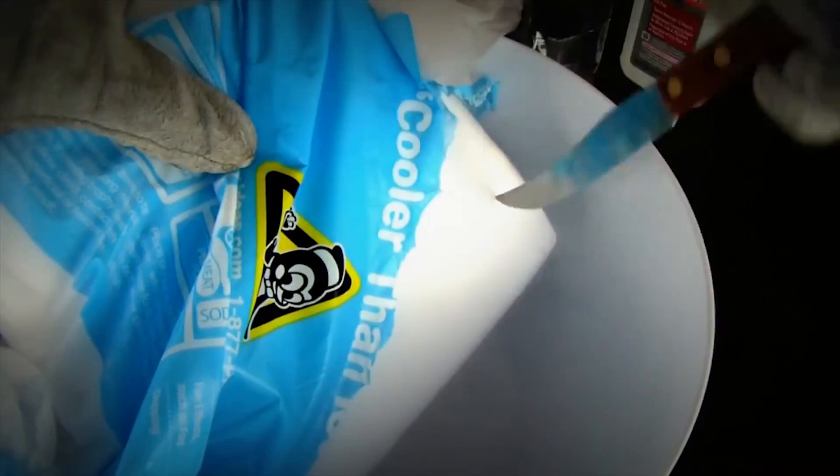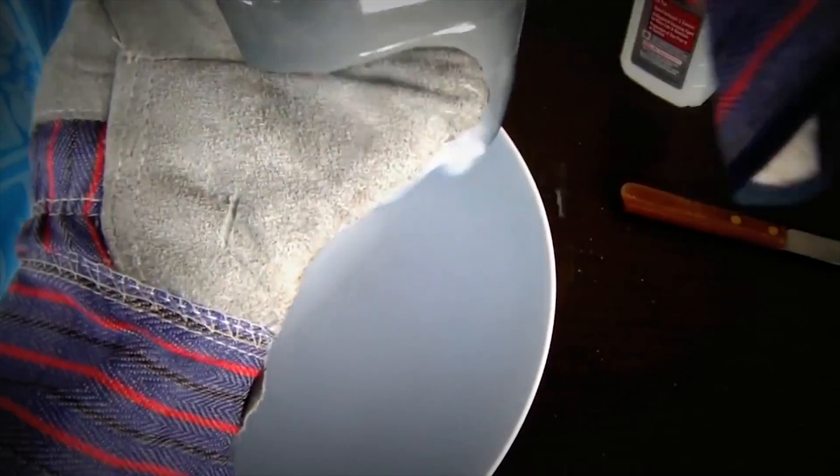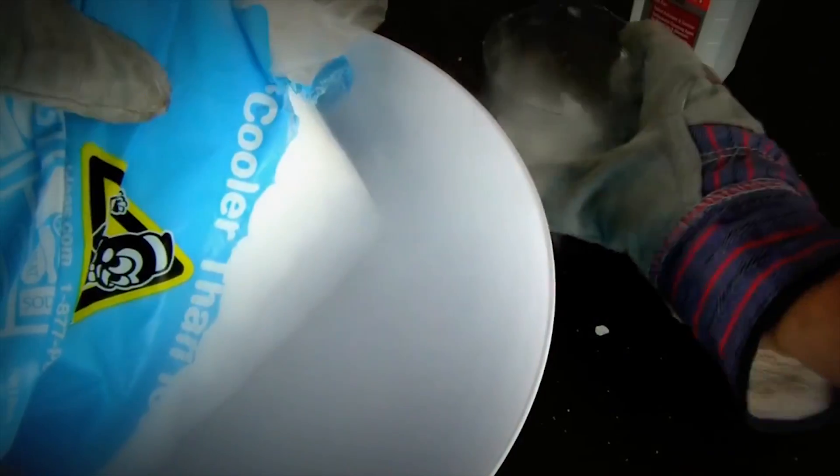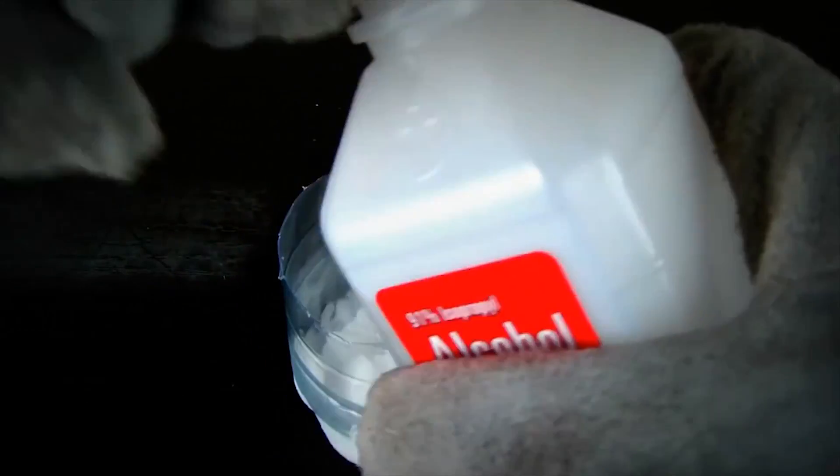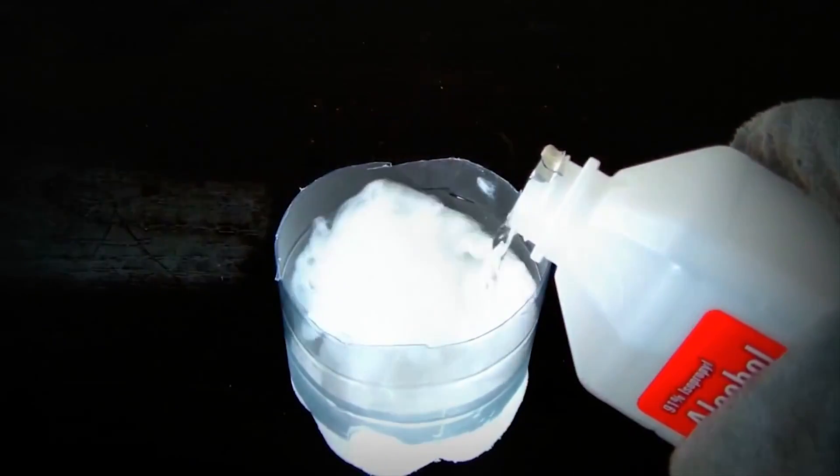And we gonna get our dry ice and chop up bunch of little pieces. It's not too hard. And then fill it up in this small cup. Looks like we gonna need some more. Then we gonna get our alcohol and pour it into the dry ice. Guys, be careful.